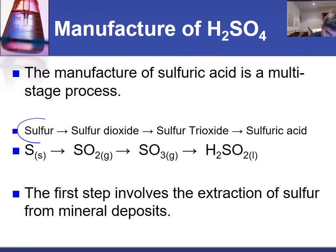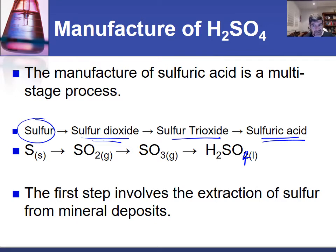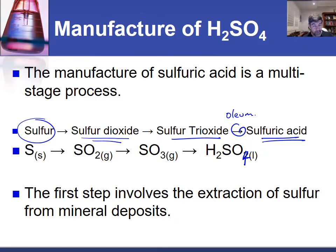We start with elemental sulfur — that's the first thing we need to collect, and we're going to look at the extraction of that in this video. Then that sulfur needs to be oxidized to form sulfur dioxide, then further oxidized to sulfur trioxide, and finally our last product H2SO4, which is sulfuric acid. An important intermediate between those last two steps is oleum, which I'll deal with a little bit later.